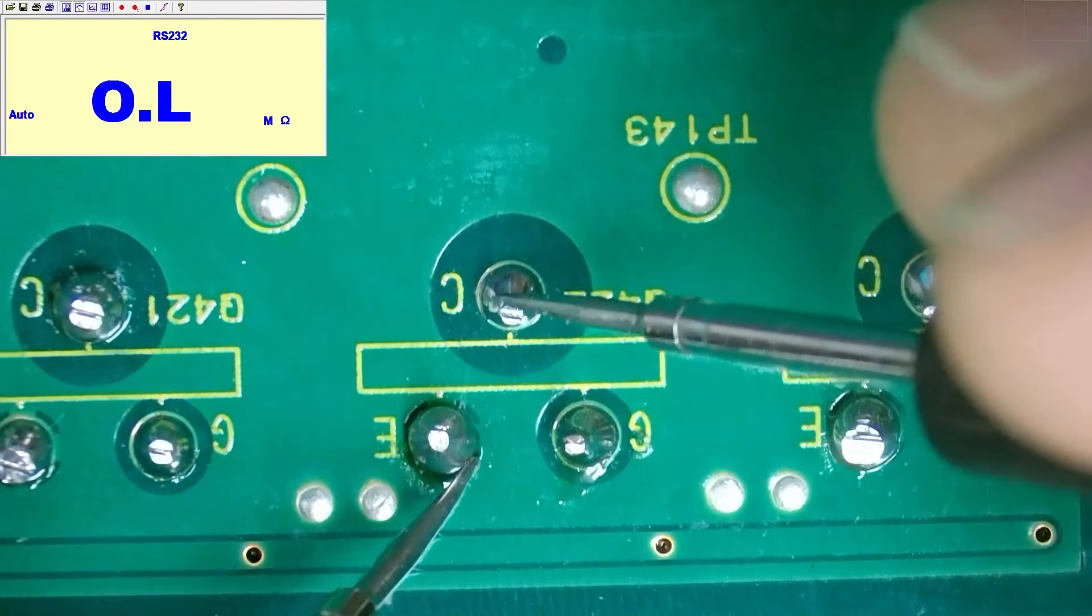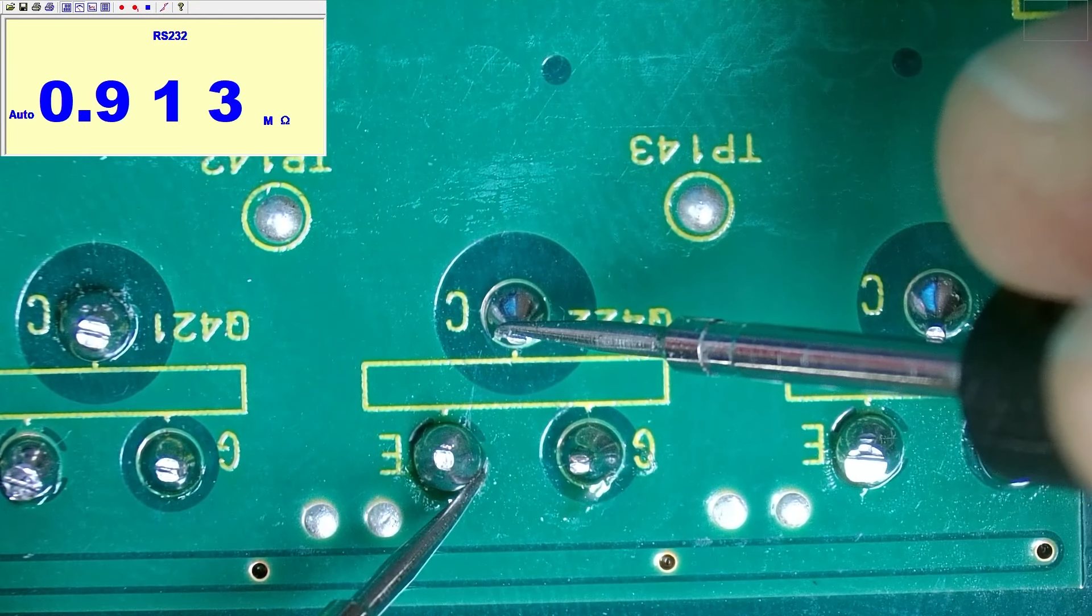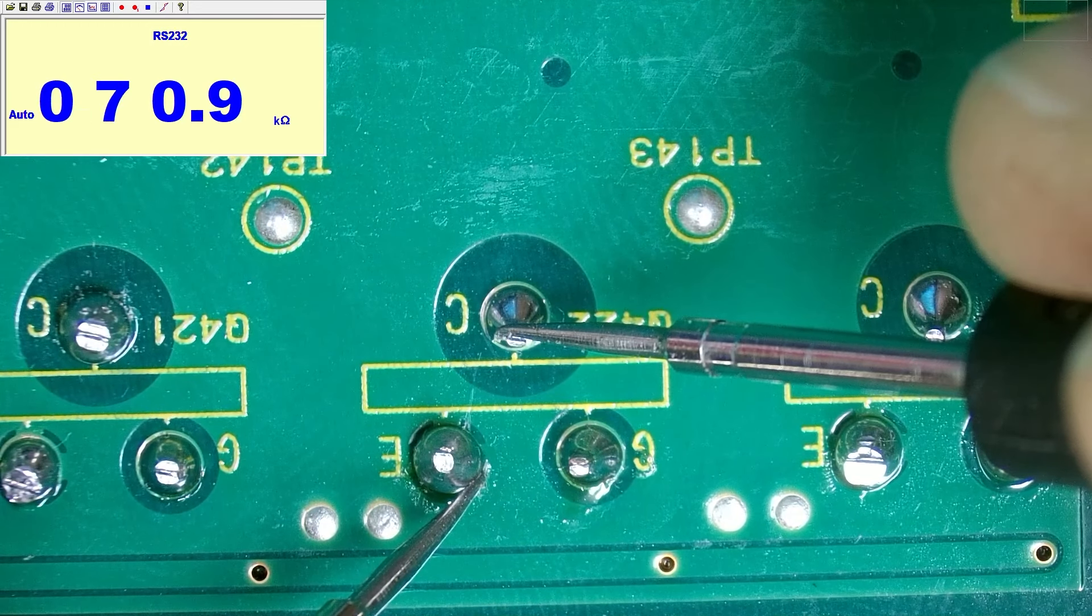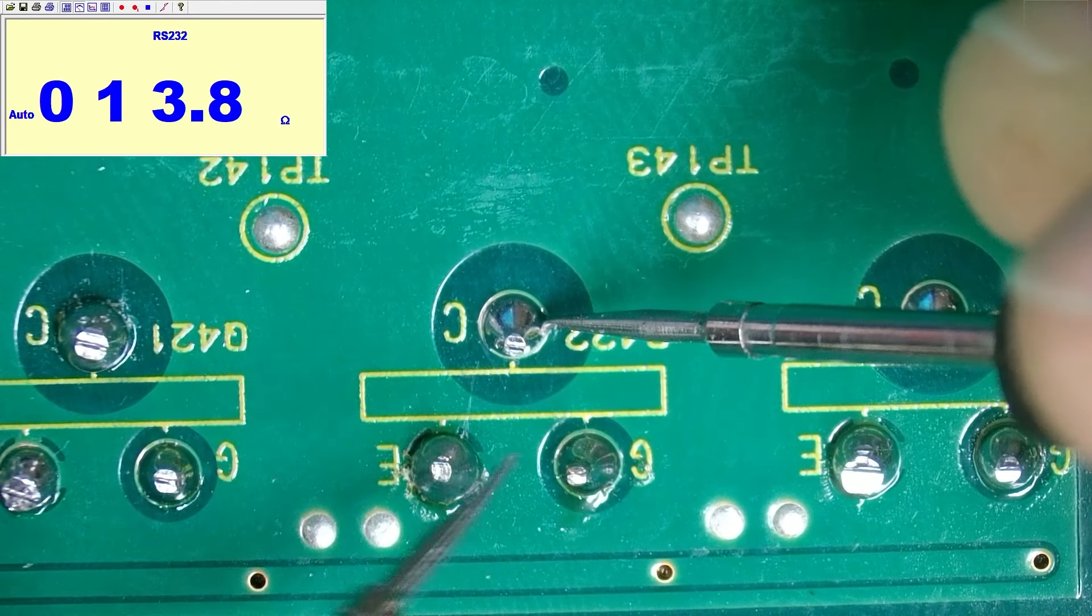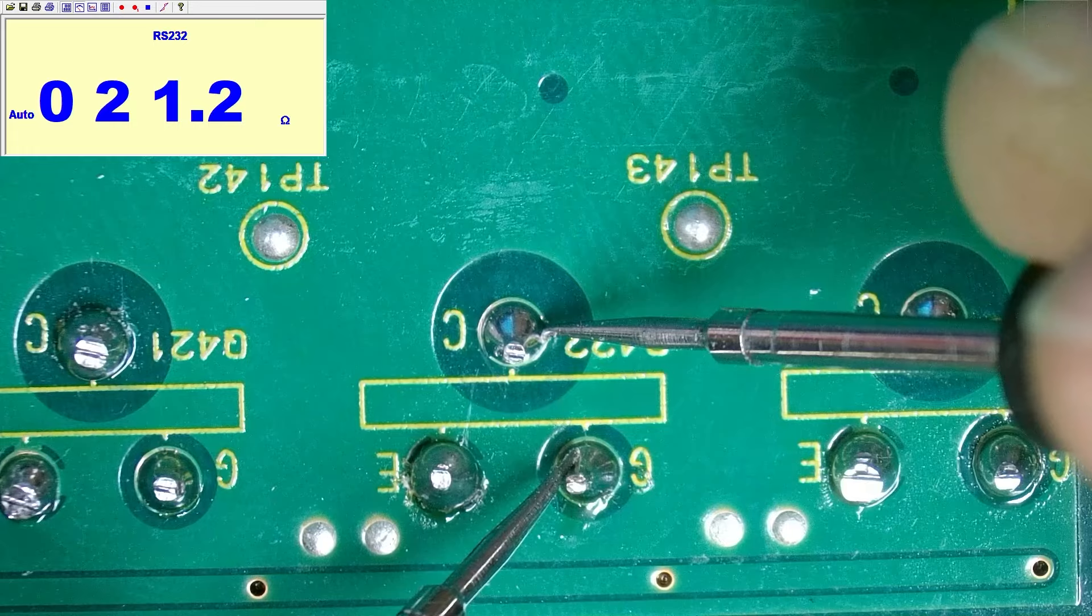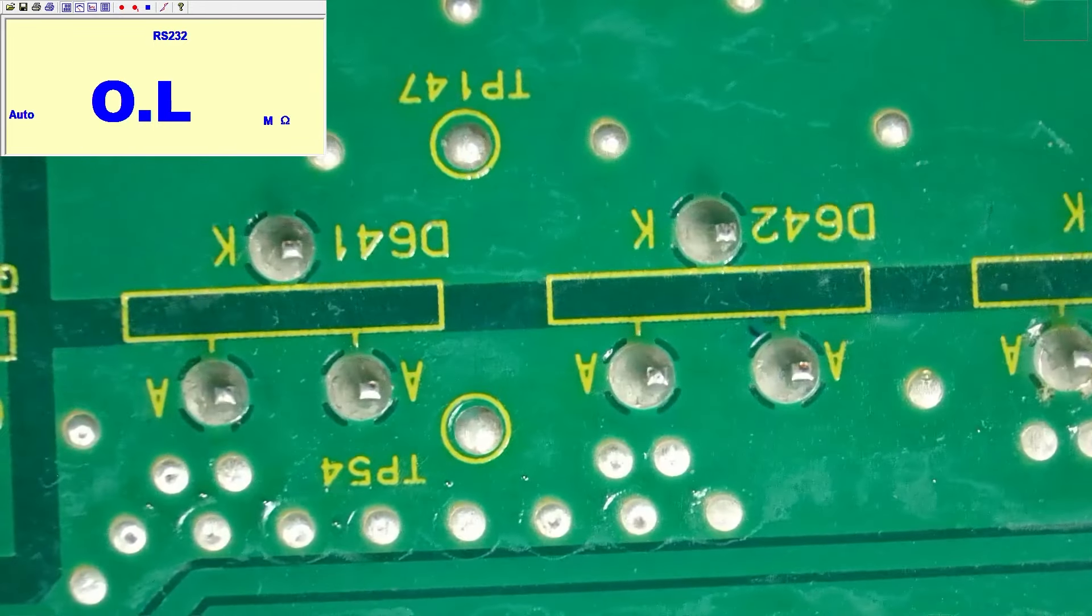And we are getting 2.9 ohms. So that is shorted. Since this one is in parallel with these two, we should also be seeing some shorts on these two as well. I'm probably just not making good contact here. There we go, 3.2, 21 ohms.